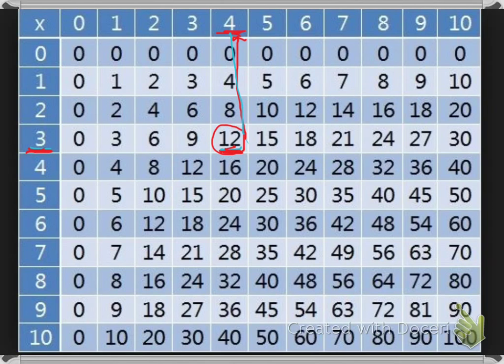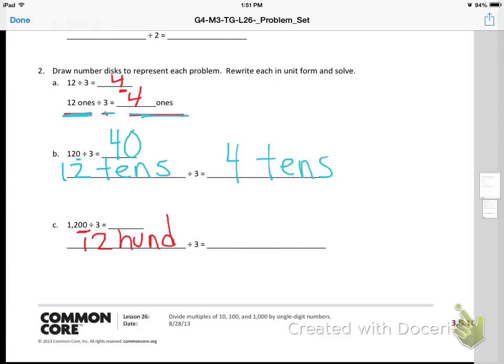So instead of 4 ones like it was up here, it's 4 hundreds because this is hundreds, so my answer also has hundreds. How do I write 4 hundreds in standard form? Well, I put in those two zeros. 4 and 2 zeros is 400.